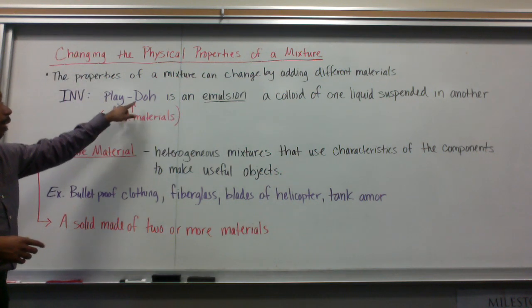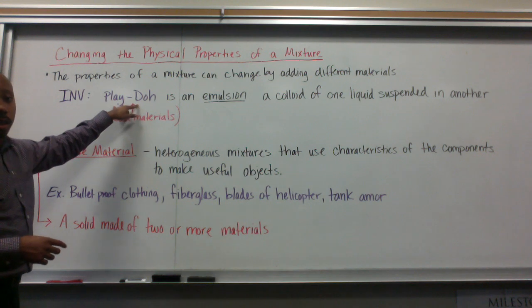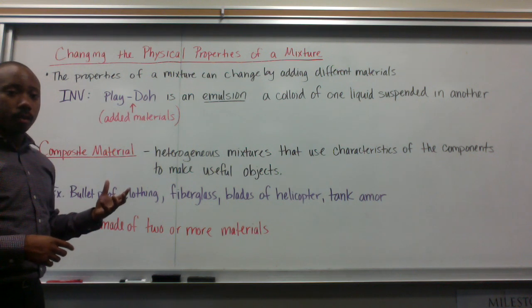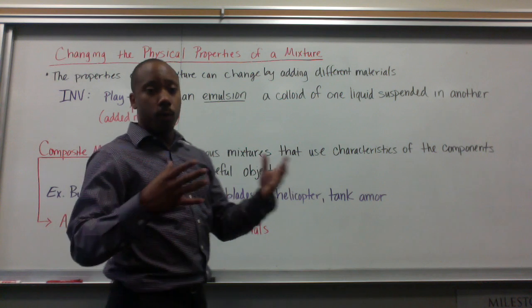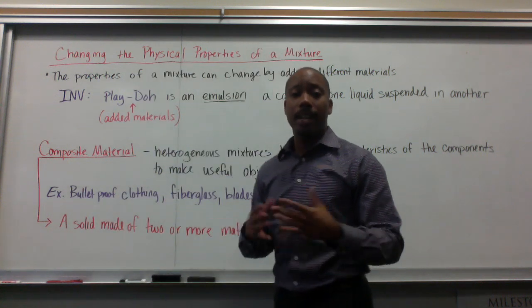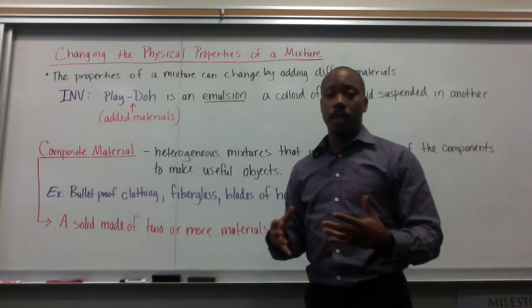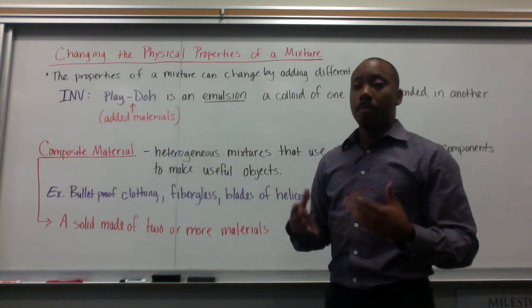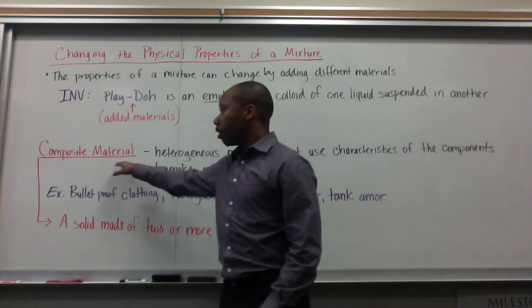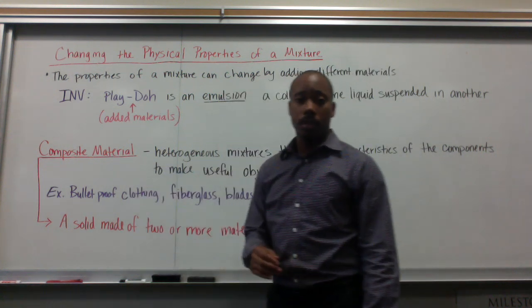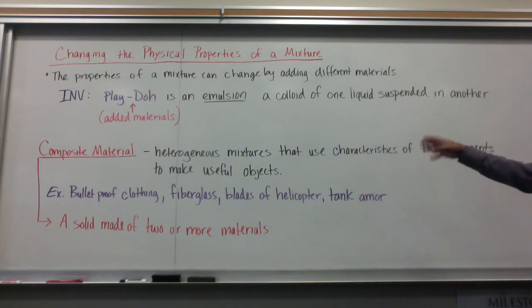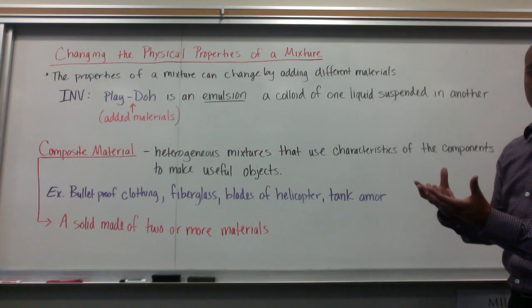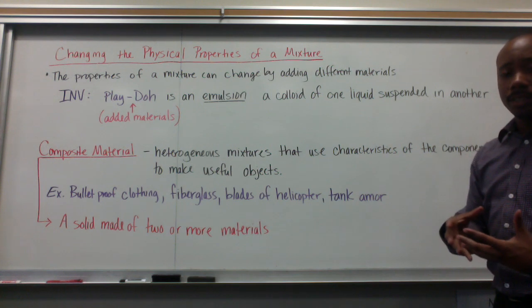As we added materials to the Play-Doh, we changed the properties. This happens in many different ways — man does this to advance technology. Man likes to make things called composite materials. A composite material is a heterogeneous mixture that uses characteristics of its components to make useful objects.